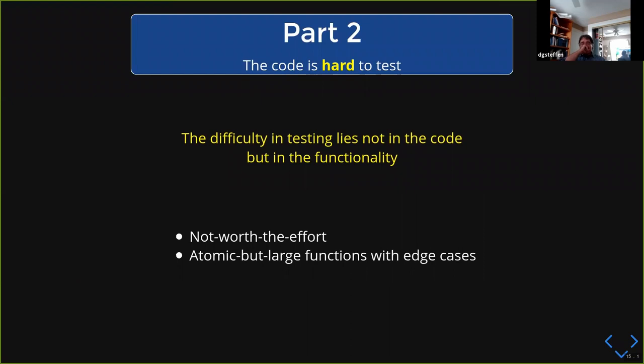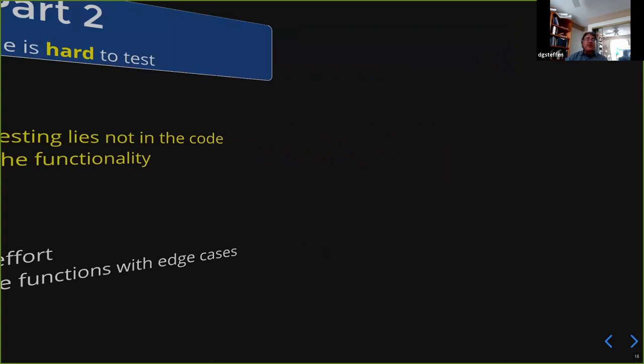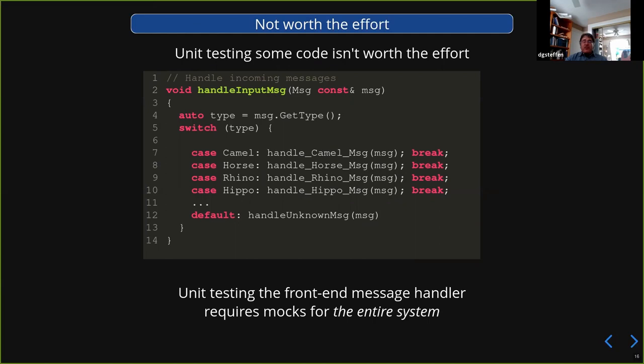Part two: where the code is hard to test just because of what the code does. You've got some huge thing — millions of lines of code — and the front end is getting messages off a network connection or reading data from a file, parsing it as messages, then dispatching to the right part of your code. You've got some forever loop.